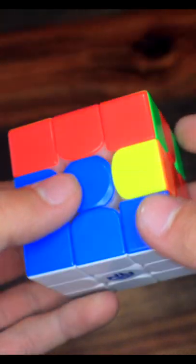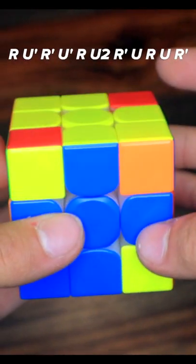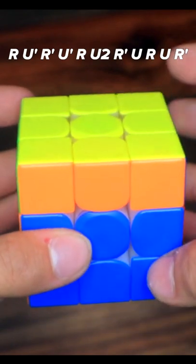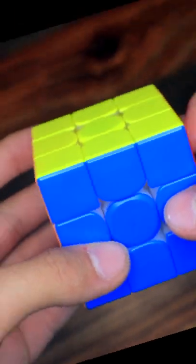And I know a pretty cool trick for this case to insert this edge and preserve the corners on top. So you insert this edge, move over the corner, do this, insert the pair, and that also happened to skip PLL.